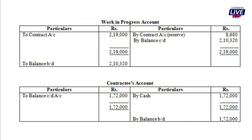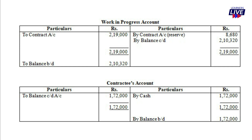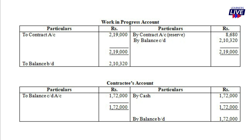We now prepare the work in progress account. We get the amount from the contract account. The debit side shows contract account $219,000. The work in progress reserve is debited from the contract account at $8,680, which is the reserved profit. The balance is carried down to next year.